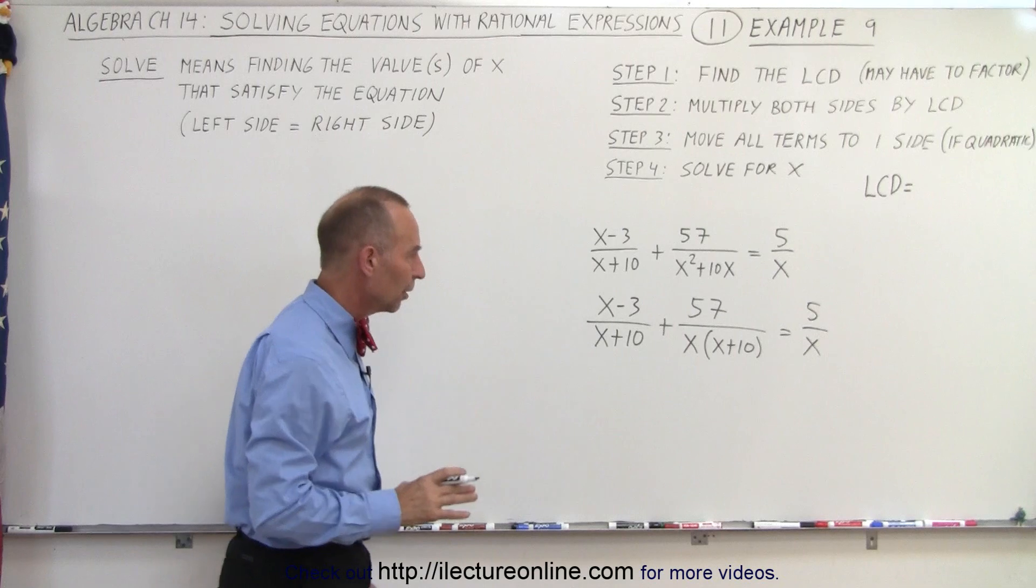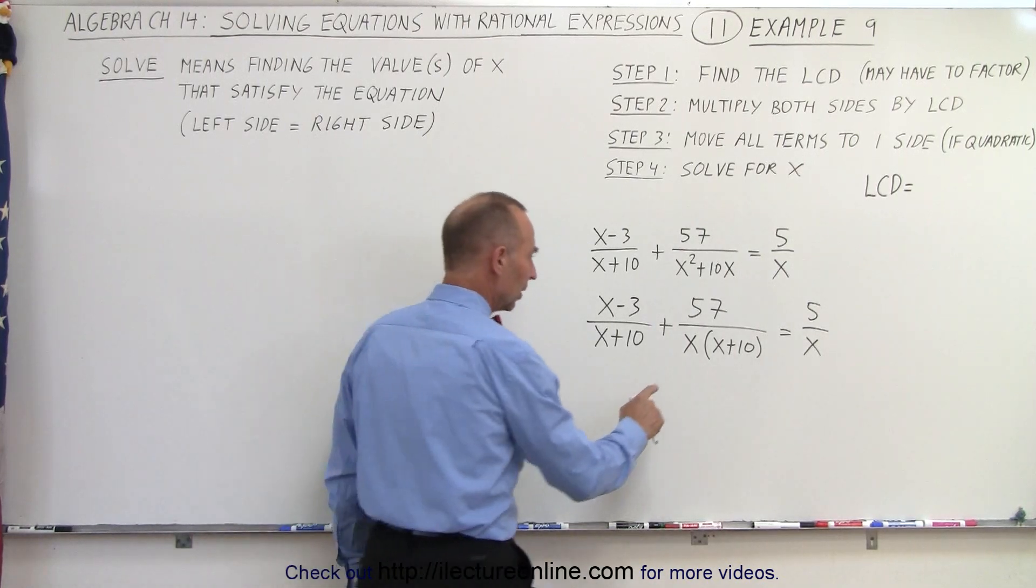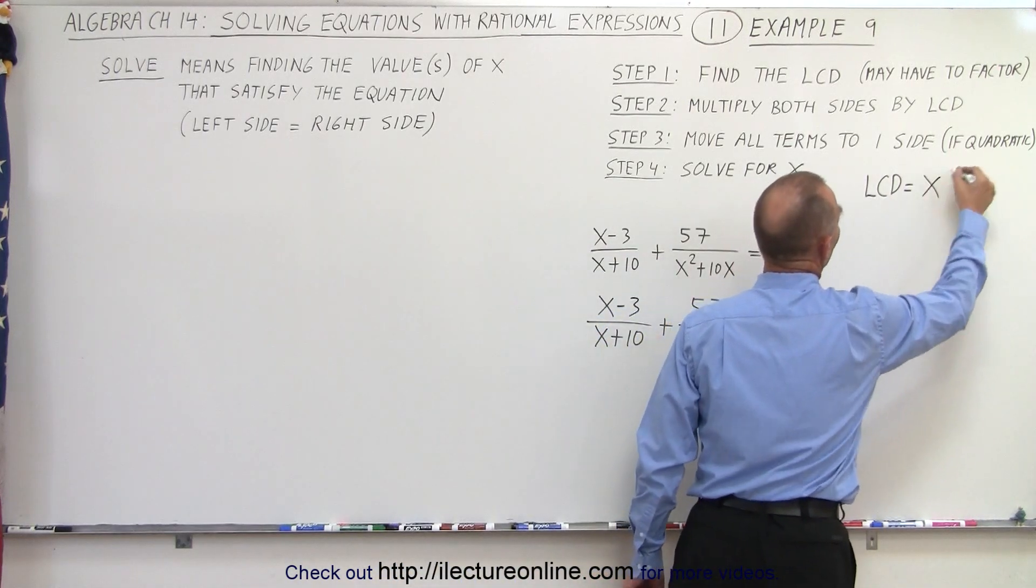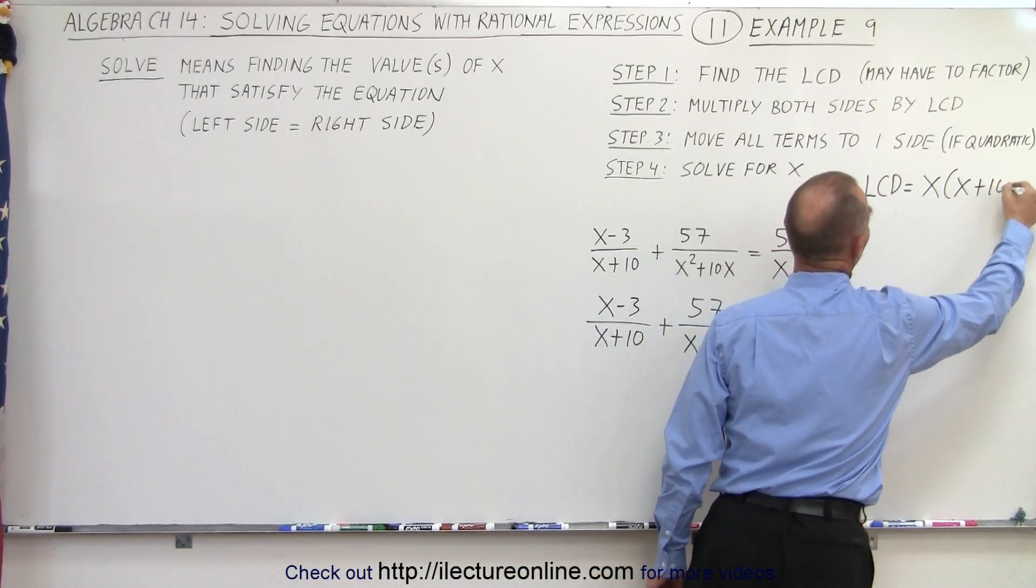Now let's see here. What are all the possible denominators? We have x and x plus 10, so that will be the lowest common denominator, x times x plus 10.